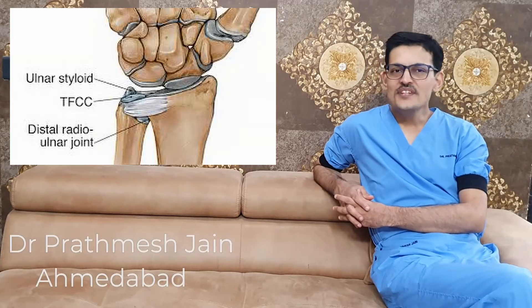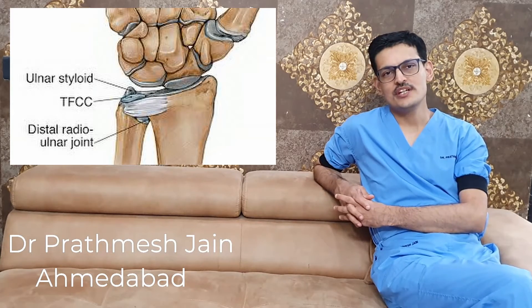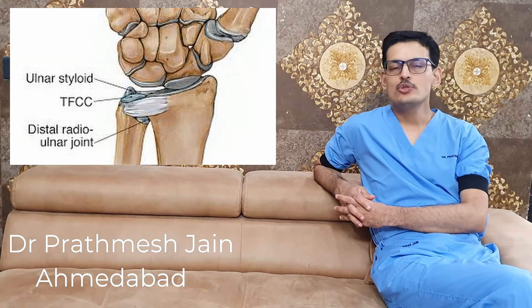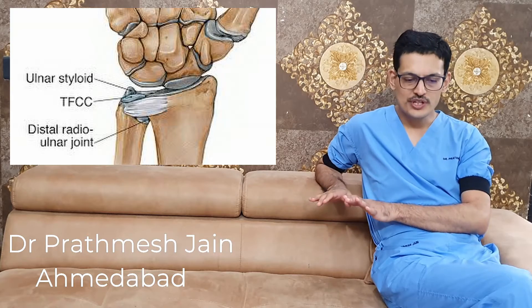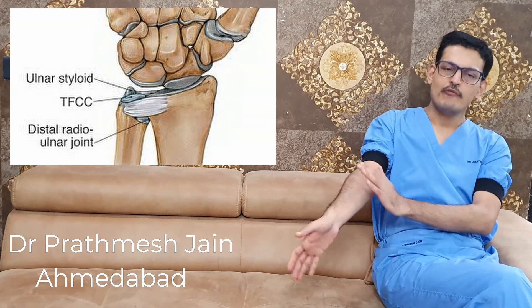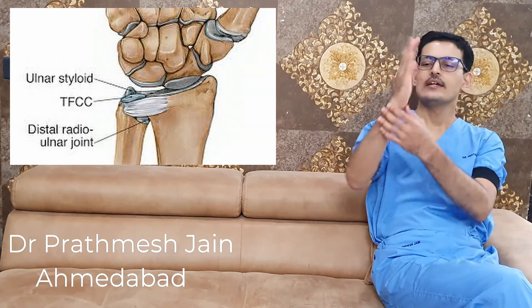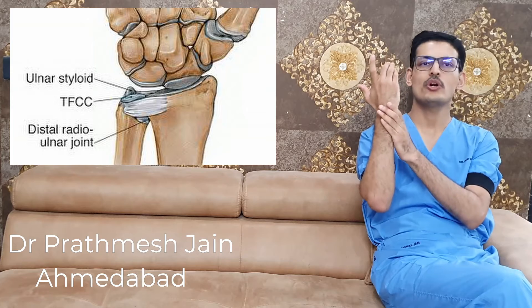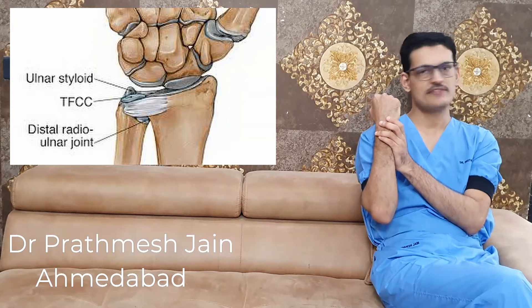Good morning friends. TFCC injury is the most common soft tissue injury seen in the wrist joint. It is usually caused by a mechanism of fall on the outstretched hand on an extended wrist with the forearm in pronation. So if you fall like this, there is an injury on the other side of the wrist and you may injure your TFCC disc. So what is TFCC?